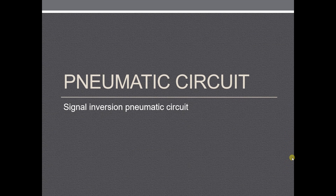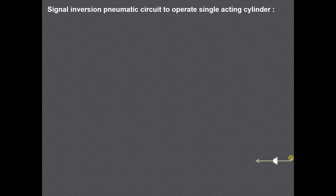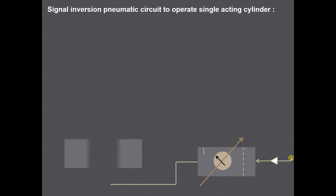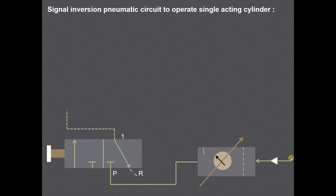In this video we will try to understand how the signal inversion pneumatic circuit works. We are having an animation which is used to simulate the given pneumatic circuit. The components used in this circuit include direction control valves and a single acting pneumatic cylinder to achieve this signal inversion pneumatic circuit.